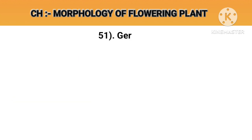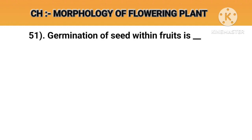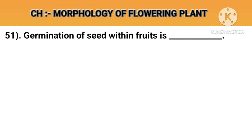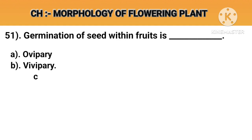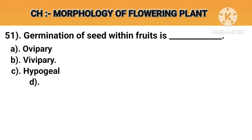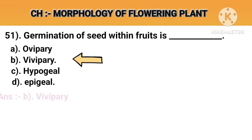Question number 51. Germination of seed within the fruit is. Option A: Ovipary. Option B: Vivipary. Option C: Hypogeal. Option D: Epigeal. Answer B: Vivipary.